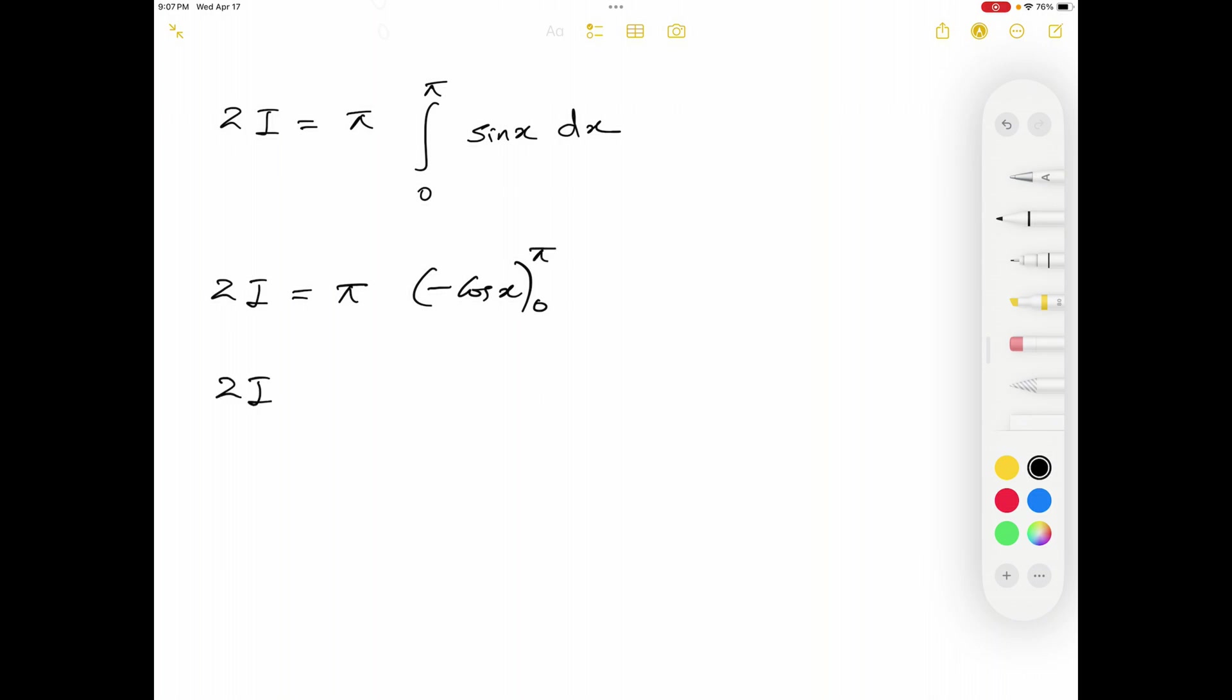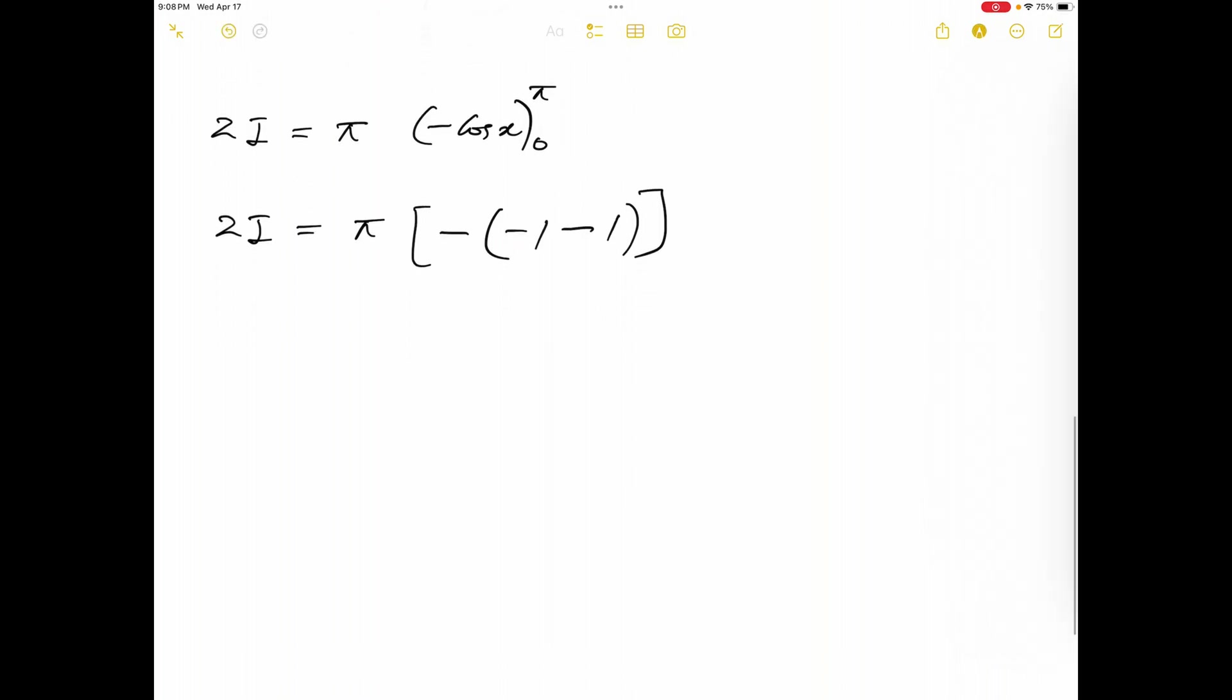All right, now 2I should be equal to π times negative cosine π. Cosine π is equal to negative 1. That minus cosine 0. Cosine 0 is equal to 1. All right, now we can simplify. 2I equals π times 2, equals 2π. Therefore our integral I should be equal to π.